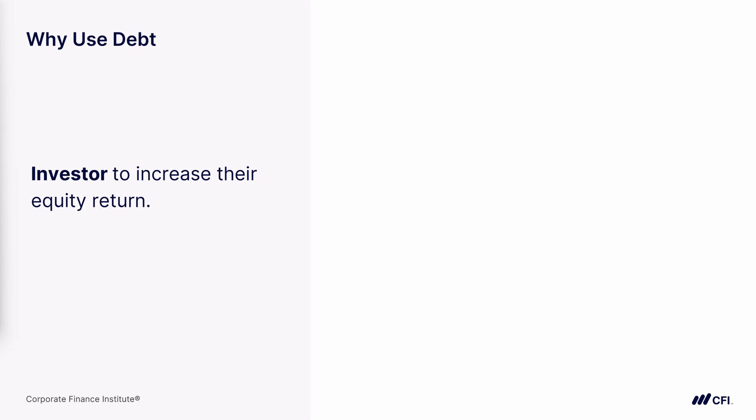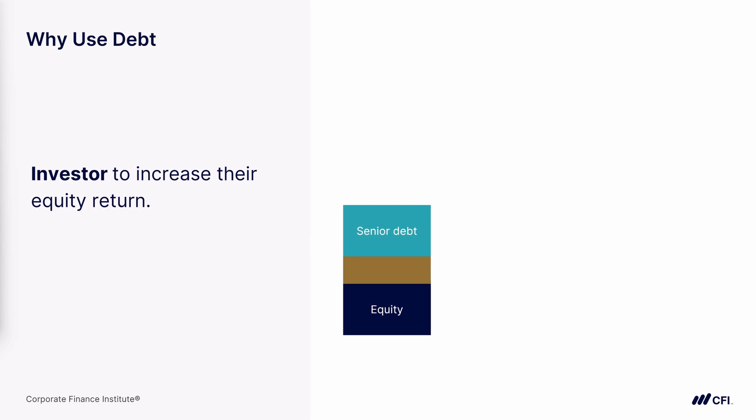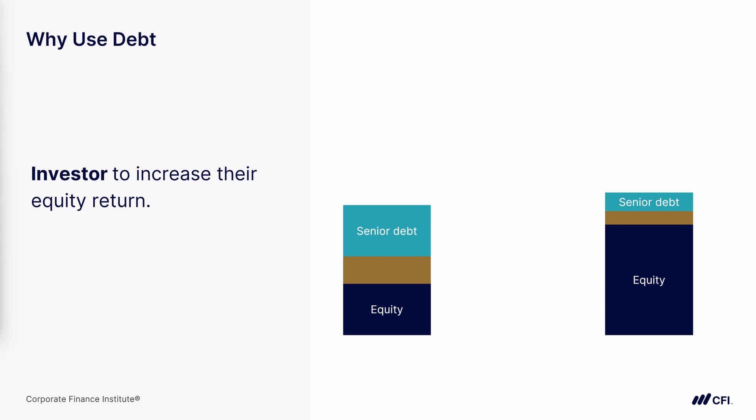Let's bring in a capital stack on one side, and imagine at some point in the future that company has grown to be larger on the right-hand side. The difference in the height of the capital stack is not that much larger in that future state. But focusing on the equity in navy blue, we can see substantial growth over that three to five year period — an IRR of 28%. This is the type of return a private equity fund may target, achieved by using debt in the capital structure to leverage the investment.